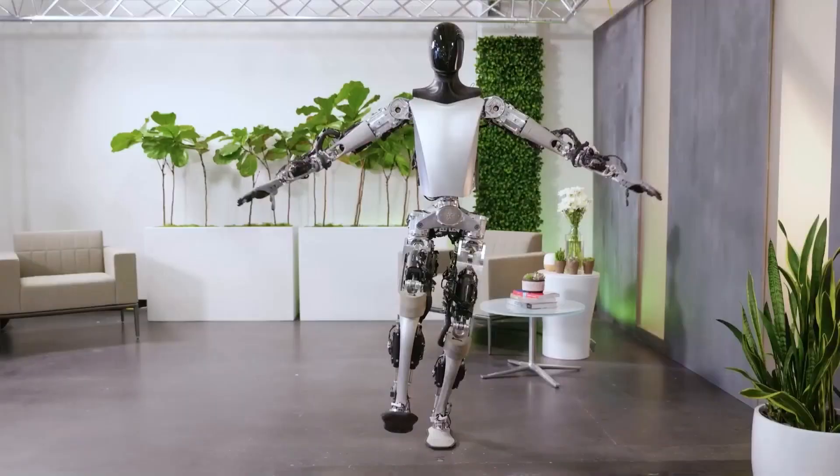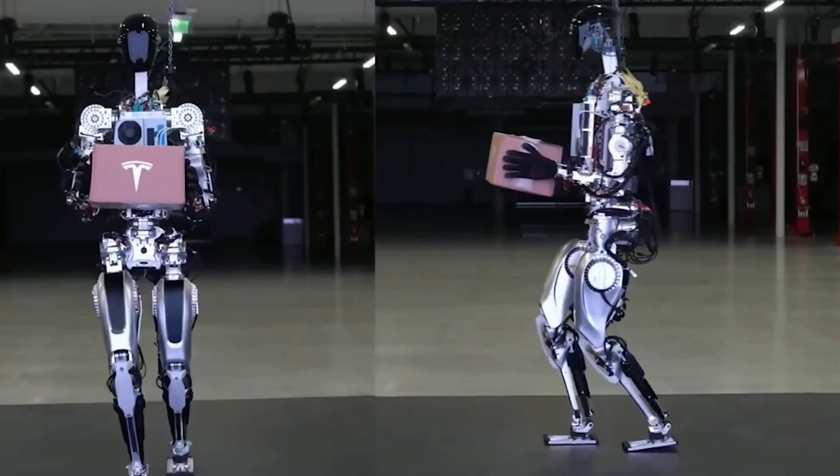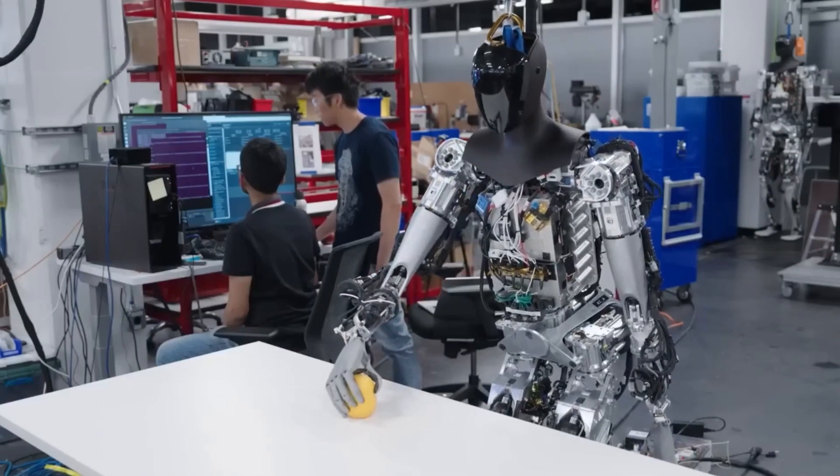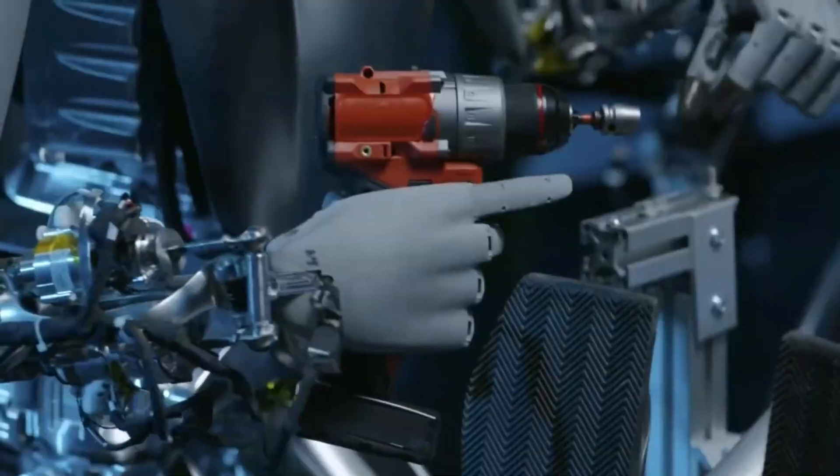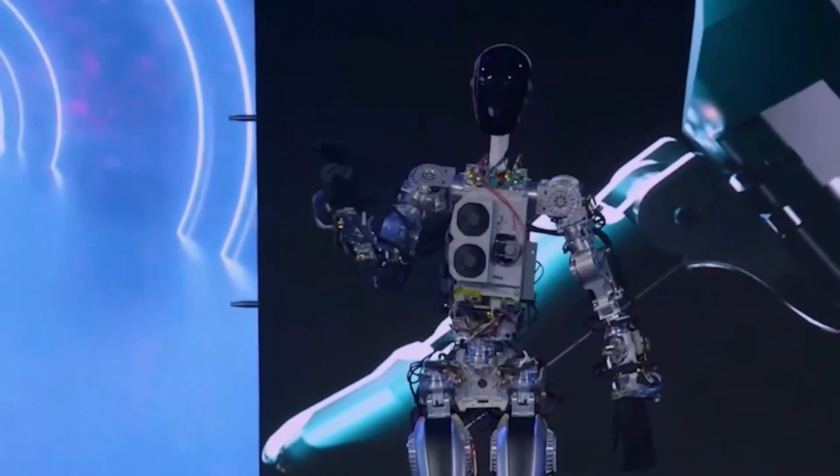Hands: Optimus has two hands with 11 degrees of freedom each, which allows it to manipulate objects with precision and skill. The hands can also be gentle enough not to break an egg's shell, demonstrating impressive torque control skills. The hands have cameras and sensors on them that provide them with vision and touch.